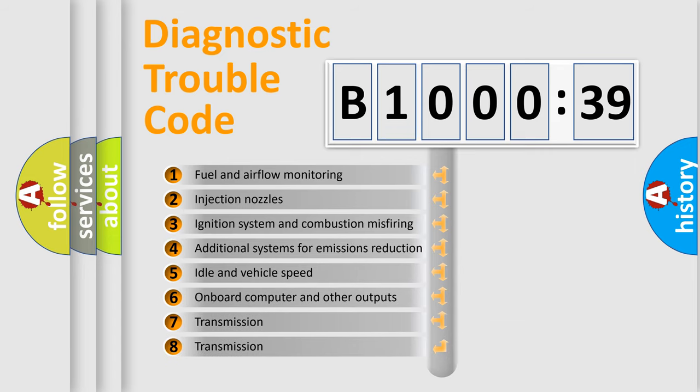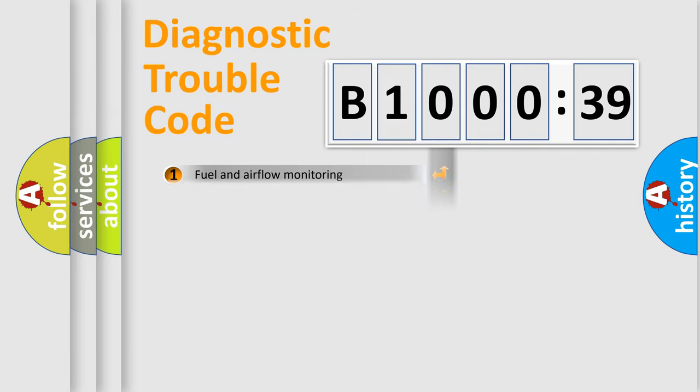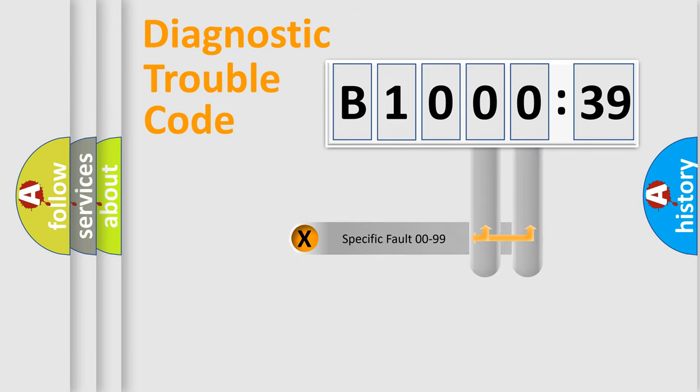The third character specifies a subset of errors. The distribution shown is valid only for the standardized DTC code. Only the last two characters define the specific fault of the group.